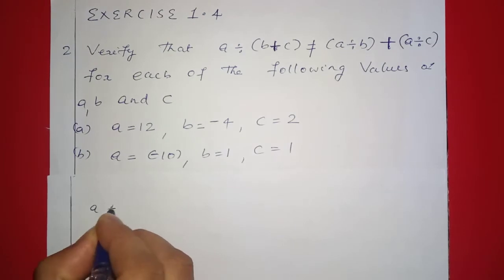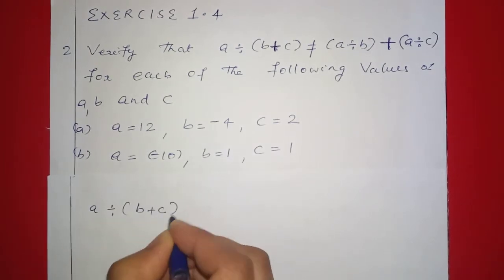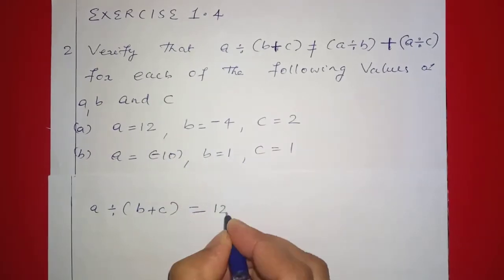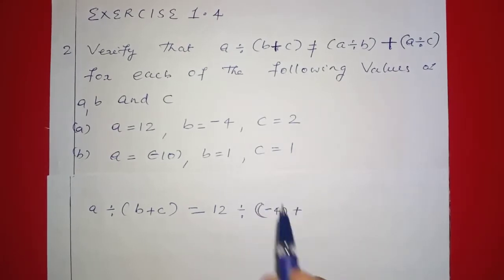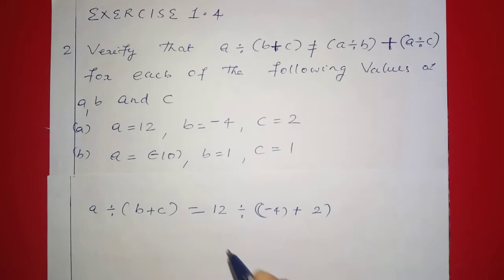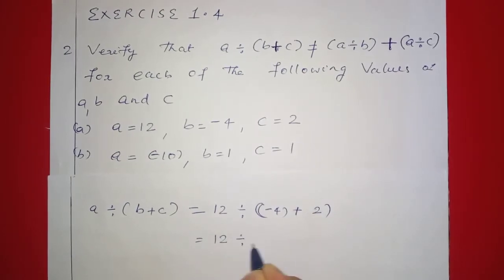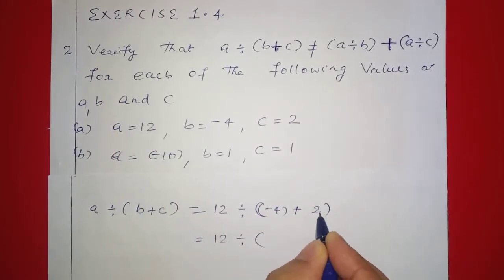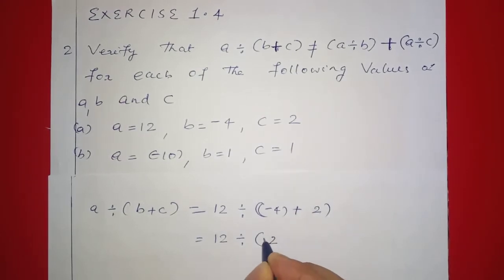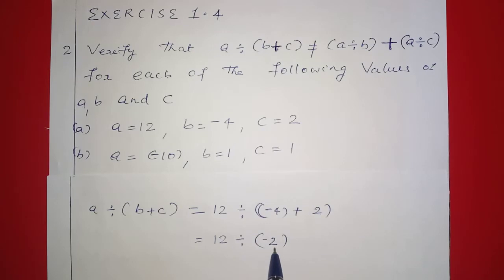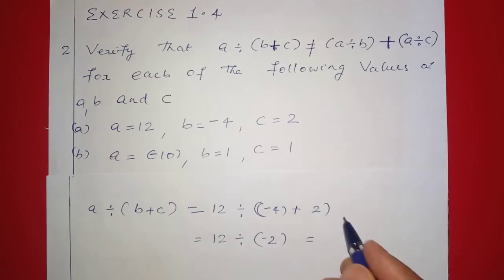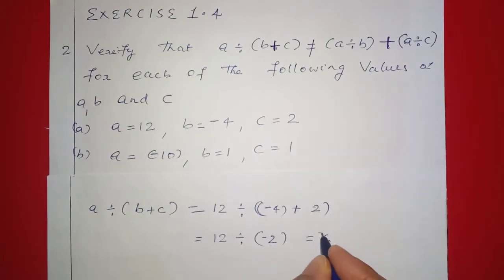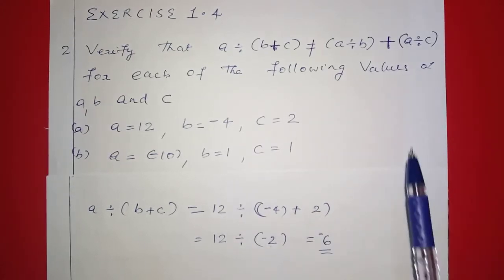A division (B plus C) is equal to 12 division (negative 4 plus 2). That is equal to 12 division negative 2, which equals negative 6. This is the left hand side.